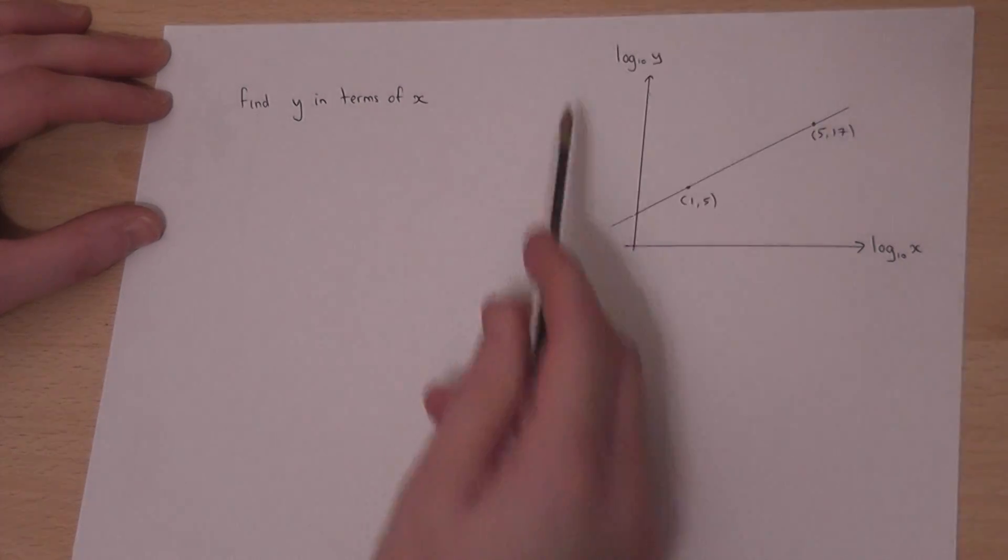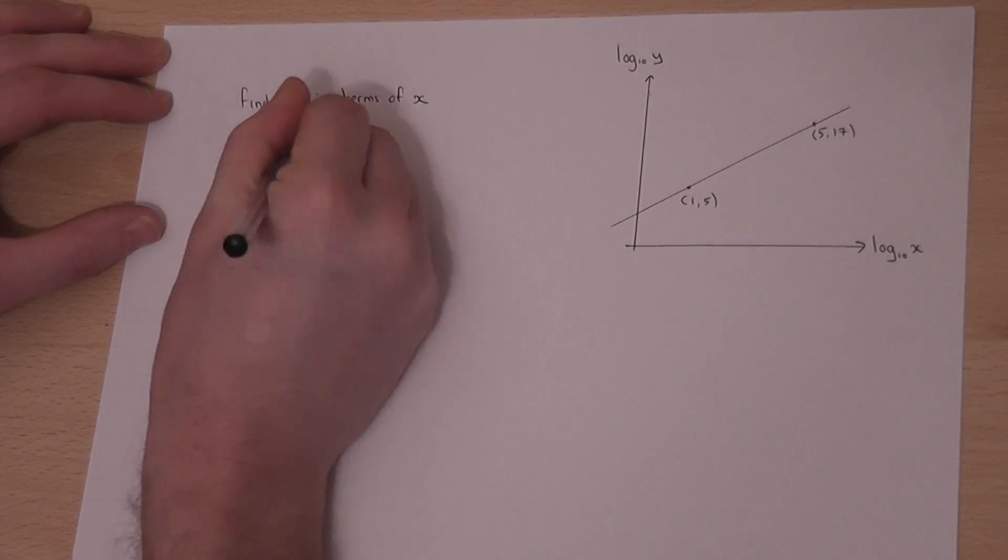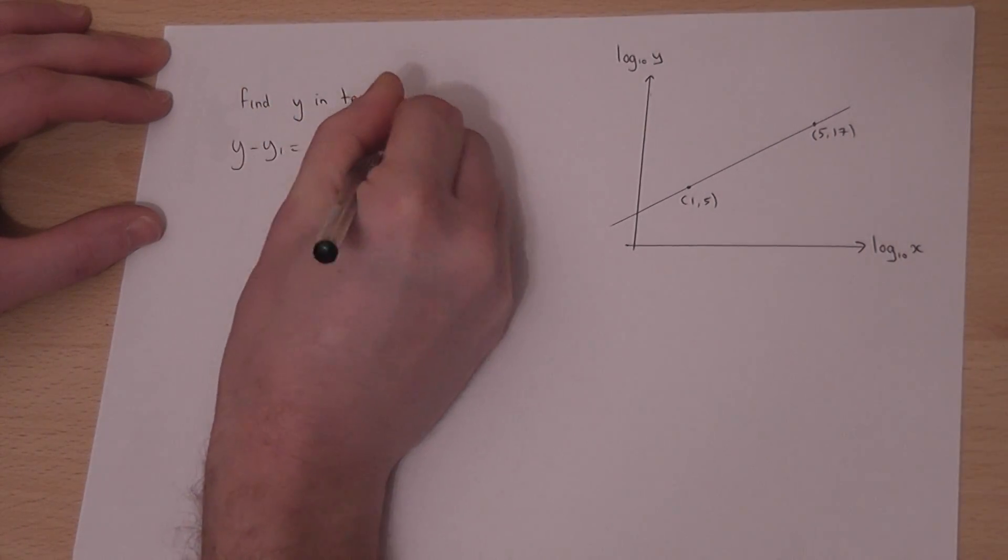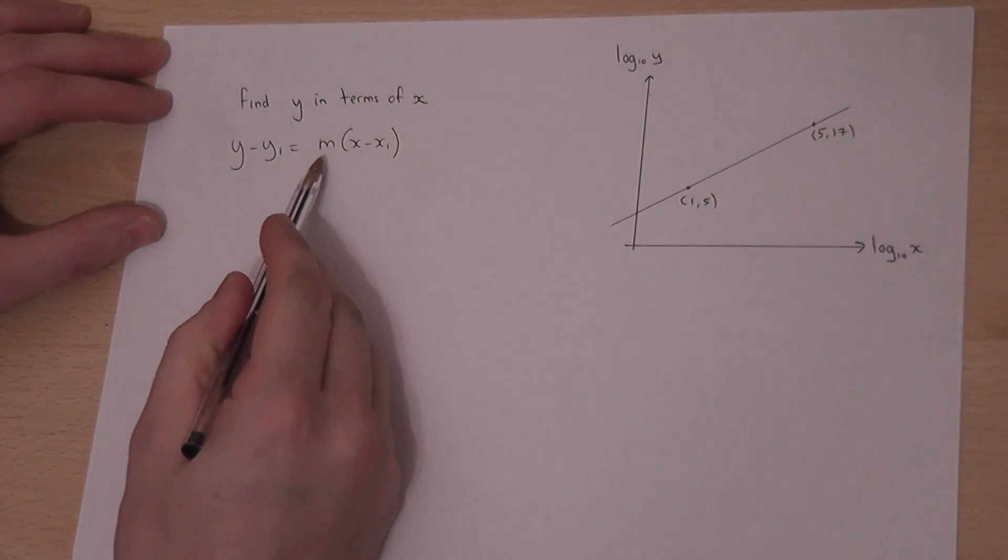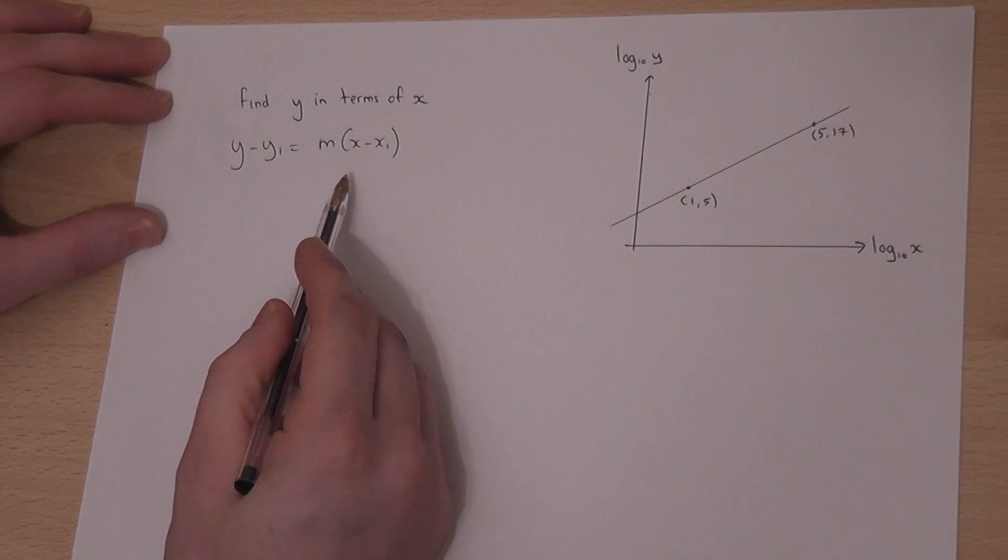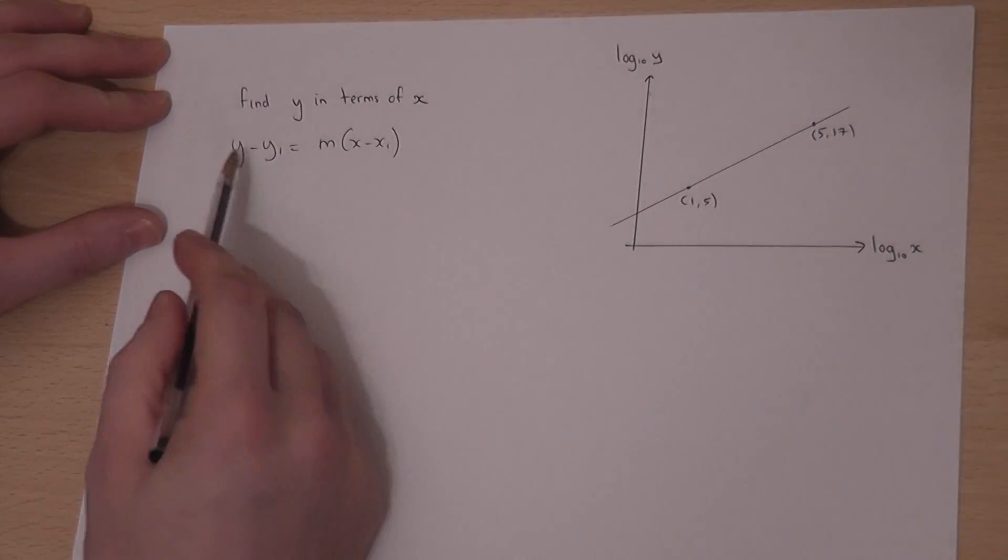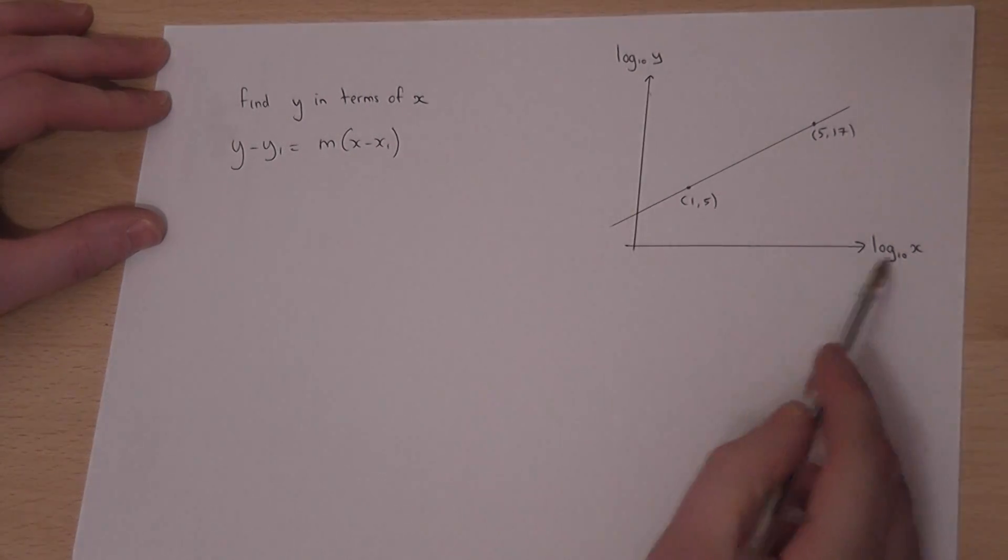We begin looking at the graph. We know that a straight line has an equation generally of the form y minus y1 equals m times x minus x1. In this case, rather than y and x, we have log y and log x.